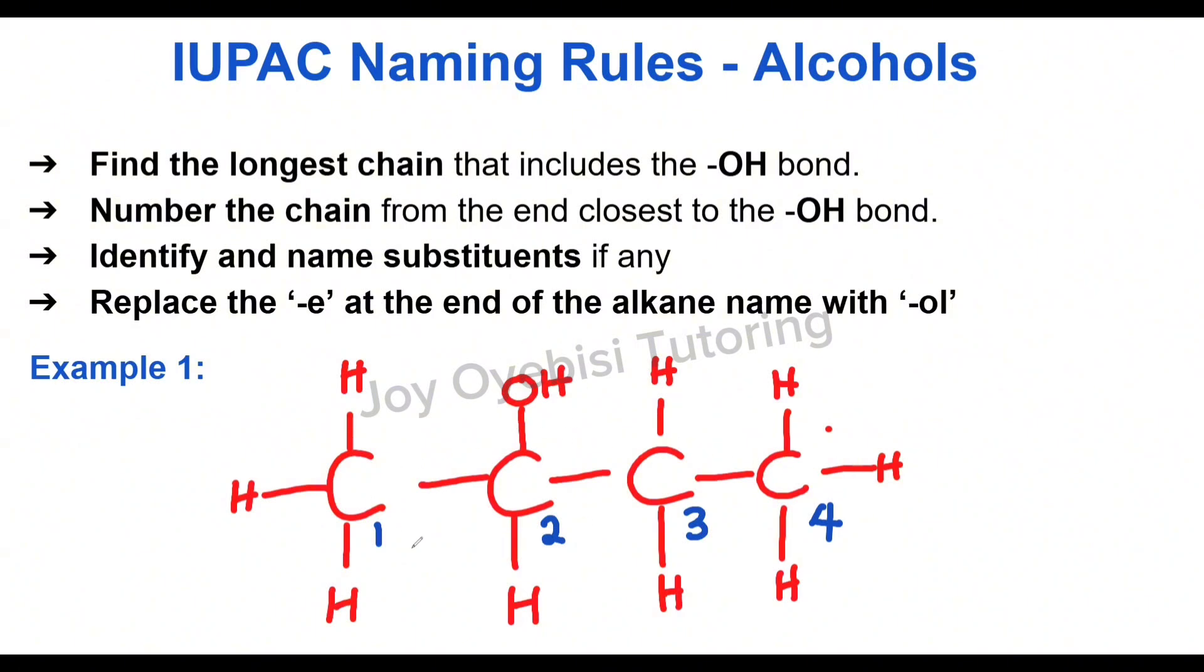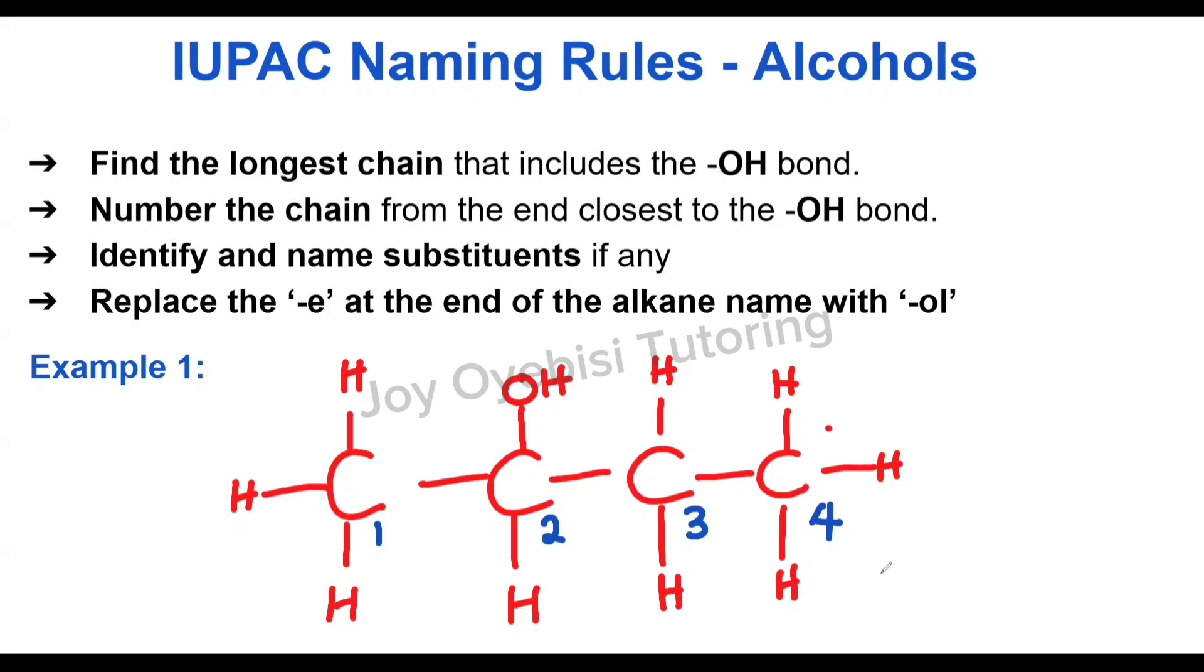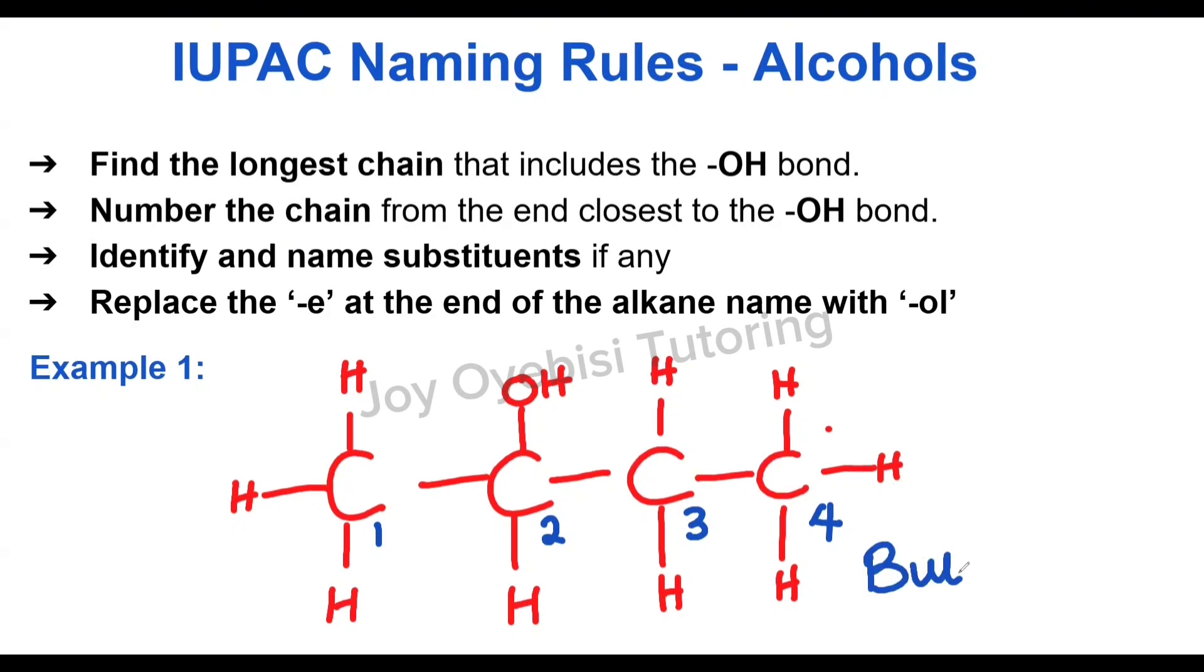Now we have a total of four carbons. The prefix for four carbons is BUT. And then, remember, for alcohols, you're going to name it as if you're doing alkane. So that will be butane. But then, you're going to remove this E and replace it with OL.